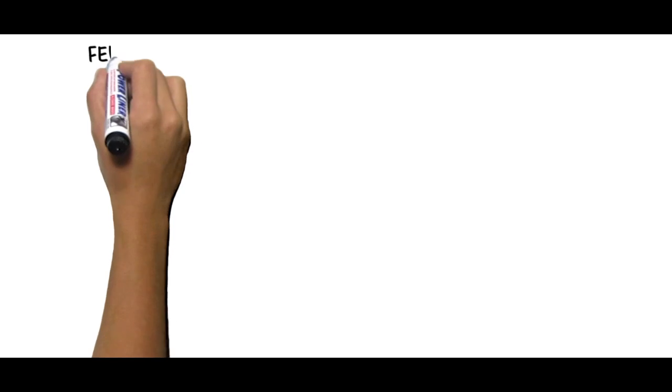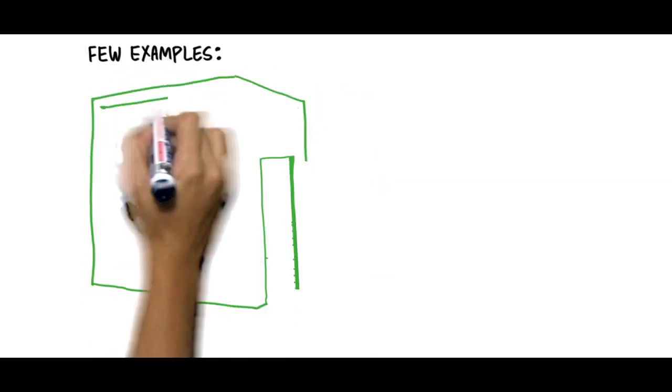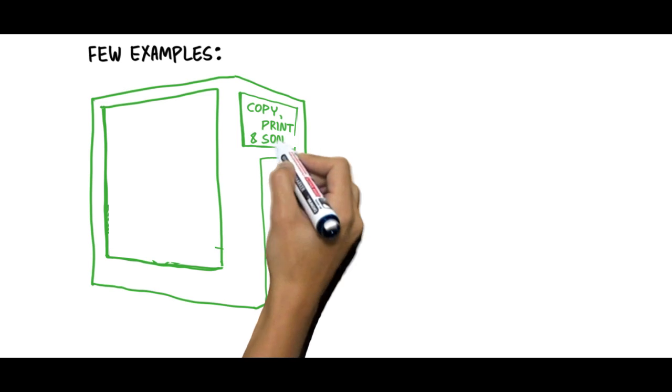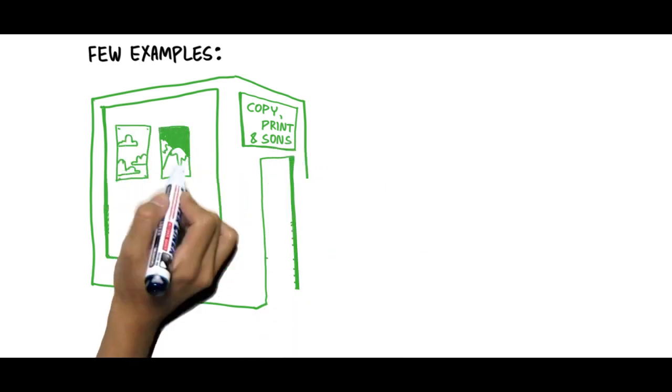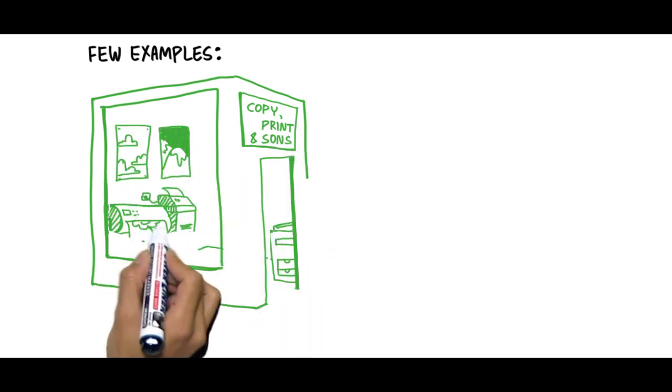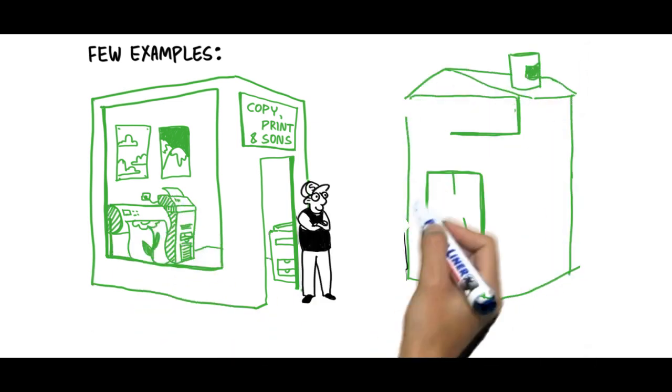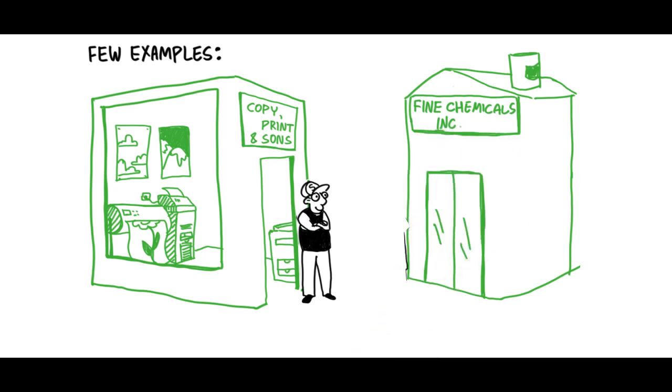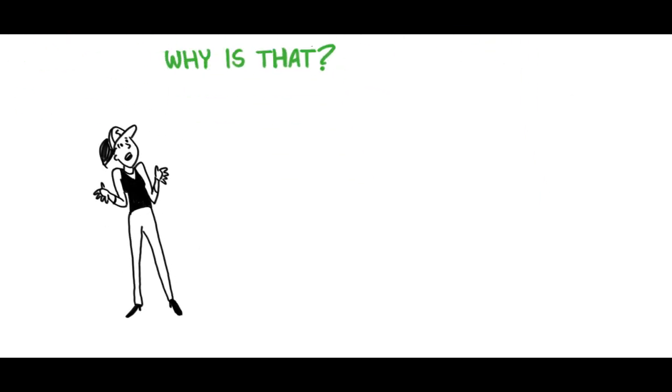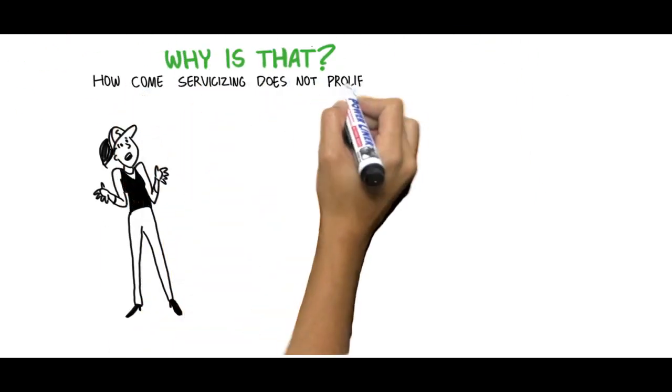Currently, there are relatively few examples that have been proven successful when moving to servicizing on a large scale. Businesses that sell printing services instead of copy machines and toners, or companies supplying chemical management services instead of selling chemicals by volume. Why is that? How come servicizing does not proliferate?